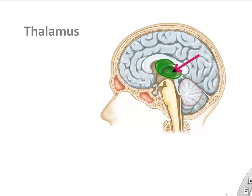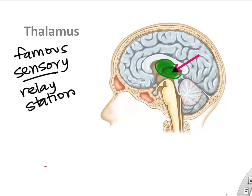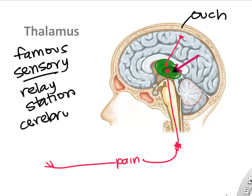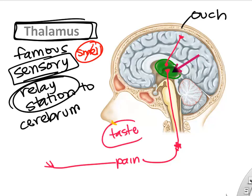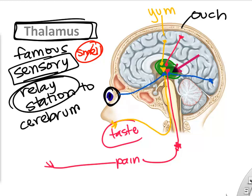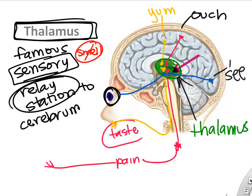The thalamus is located centrally in the brain and is famous for being the relay station for almost all the senses. Pain from your fingertips, taste, vision, touch, and temperature are all routed through the thalamus before reaching the cerebrum and your conscious awareness. The notable exception is smell, which bypasses the thalamus.